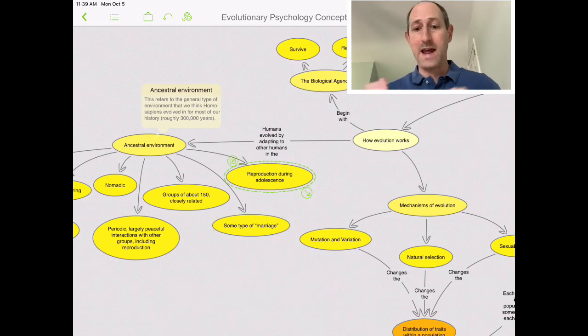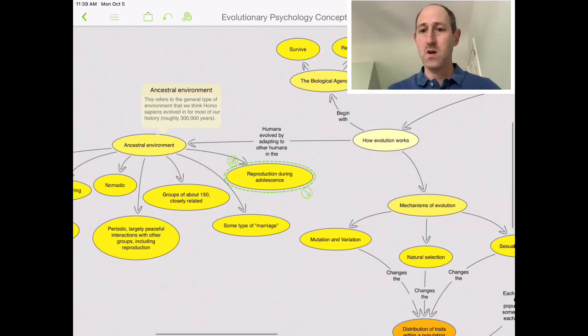And different cultures may call it different things or organize it differently, but we are a pair bonding species. And differently than now, of course, reproduction would often occur not long after the onset of puberty.